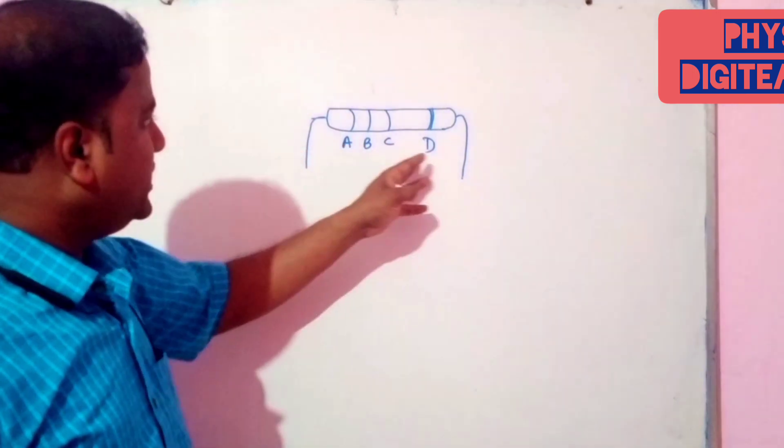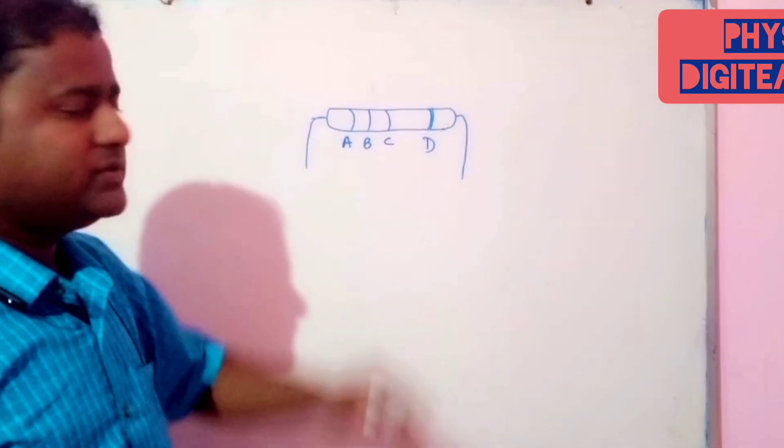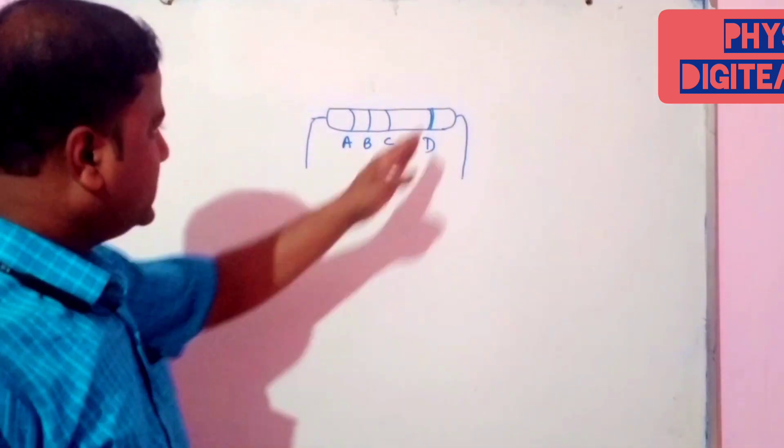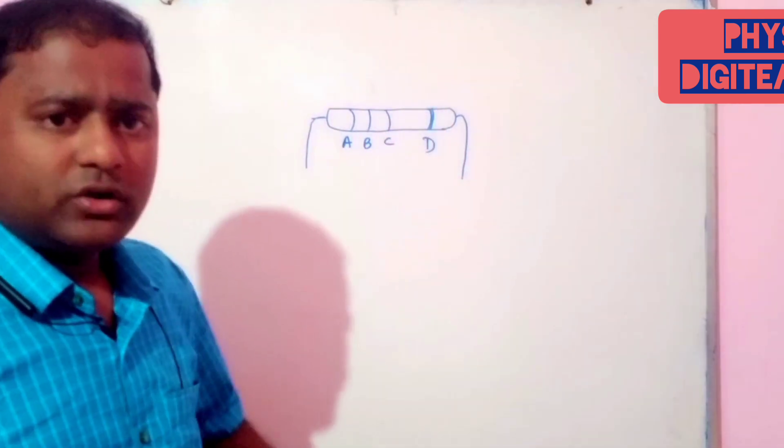This color band may be printed or may not be printed on it. We name it, this is A, this is B, this is C and this is D. And this may be defined colors A, B, C and D. Generally, the term D is called the tolerance.